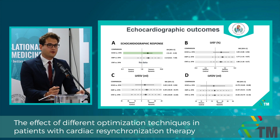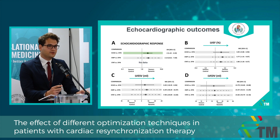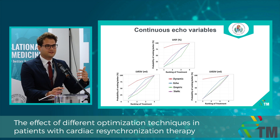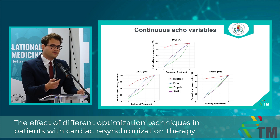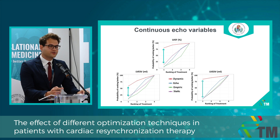For the continuous outcomes, we don't have green highlights — none of the comparisons reach statistical significance — but what we can see is that dynamic algorithms in each and every comparison reached, or tended to reach, the best results. This tendency is also nicely visible on these SUCRA plots, where each treatment is ranked by the probability to achieve better results, and the red line representing dynamic optimization is clearly separating from the other three lines.